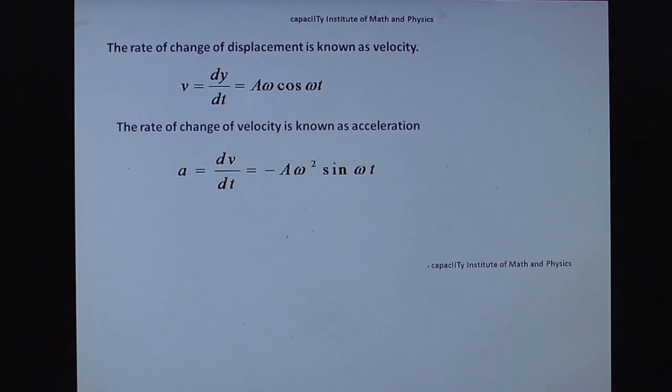Observe this. What is this? Y is equal to A sine omega T. Here omega T is as it is. A sine omega T can be written as Y. So in previous, already we got Y equal to A sine omega T. Now substitute here. Therefore, we get A is equal to minus omega square Y.